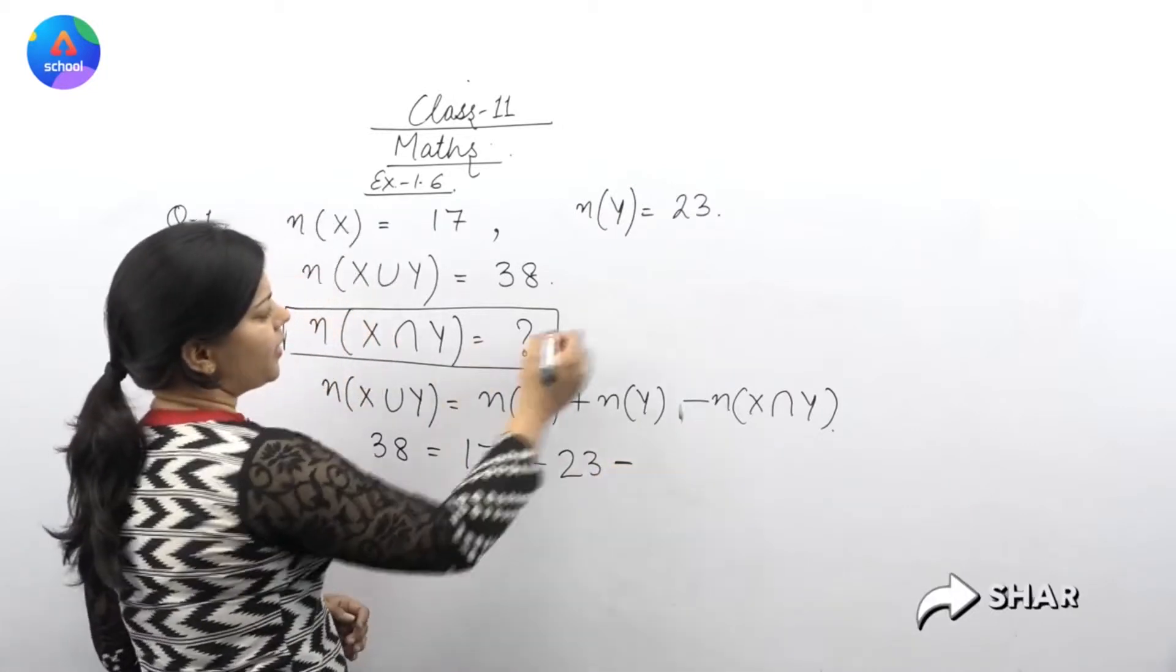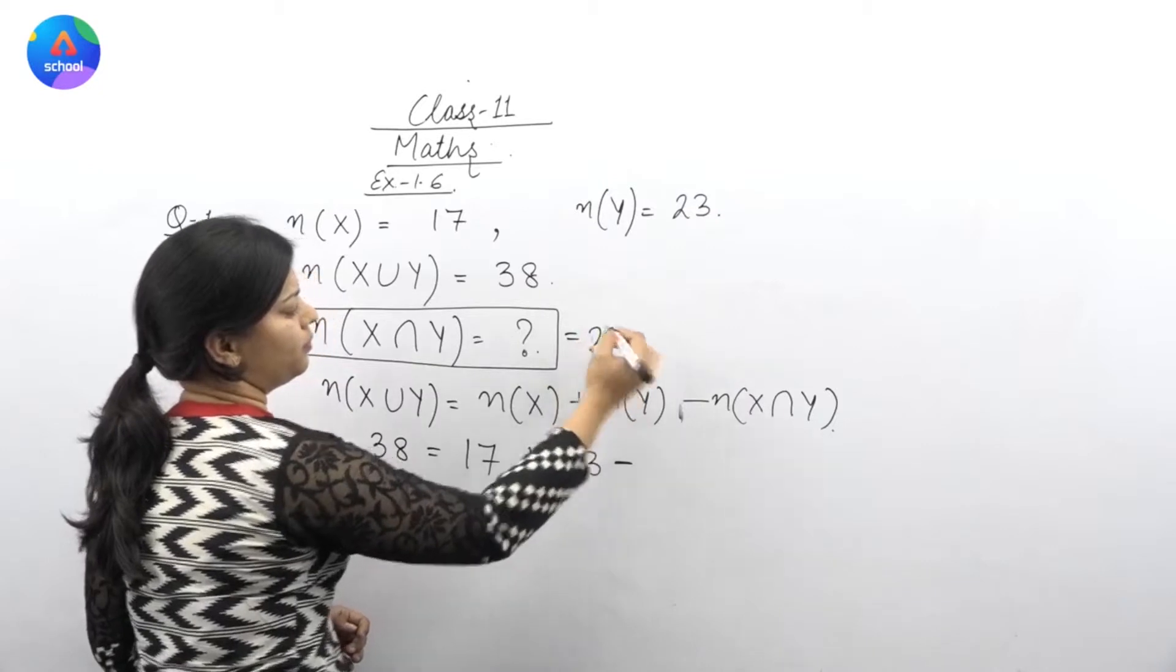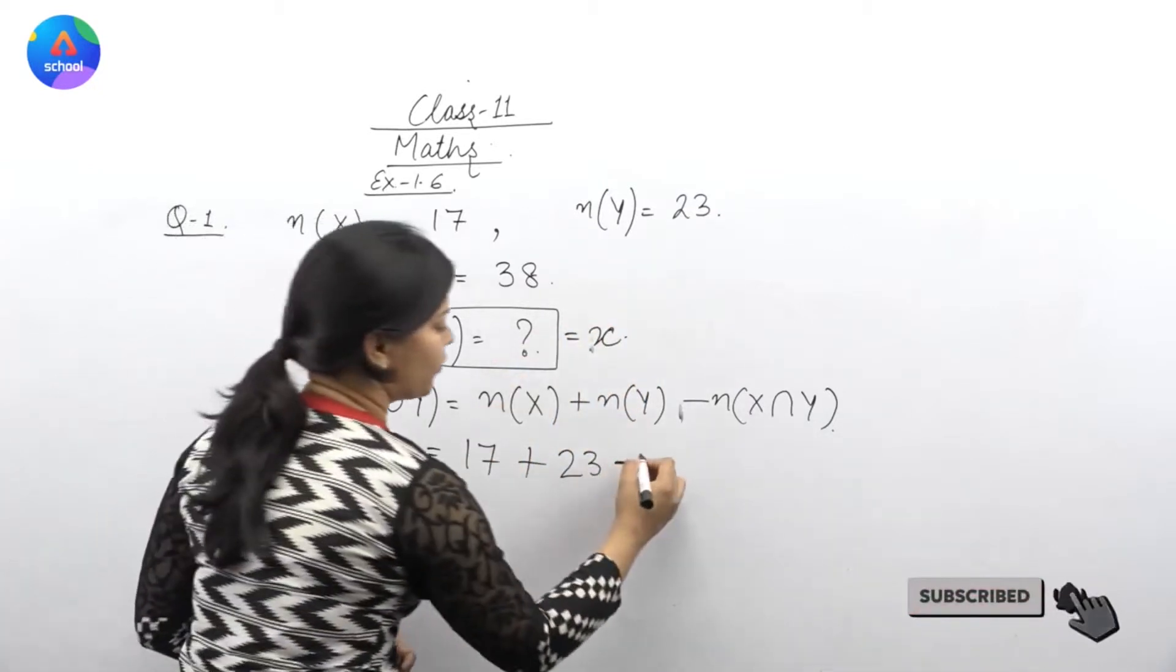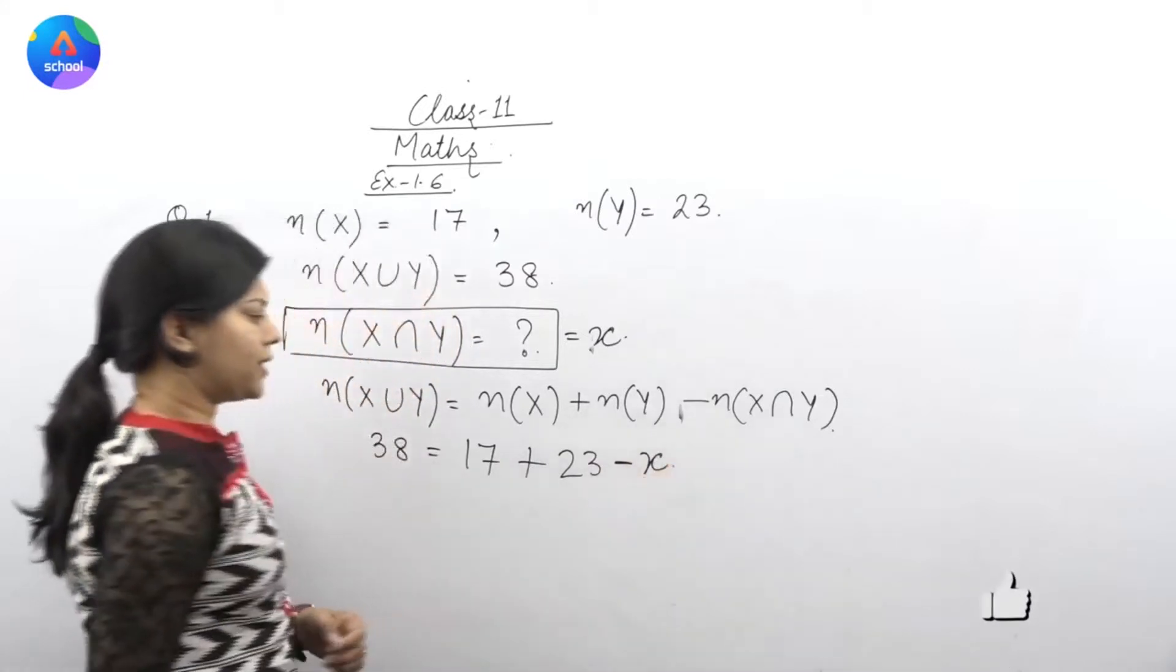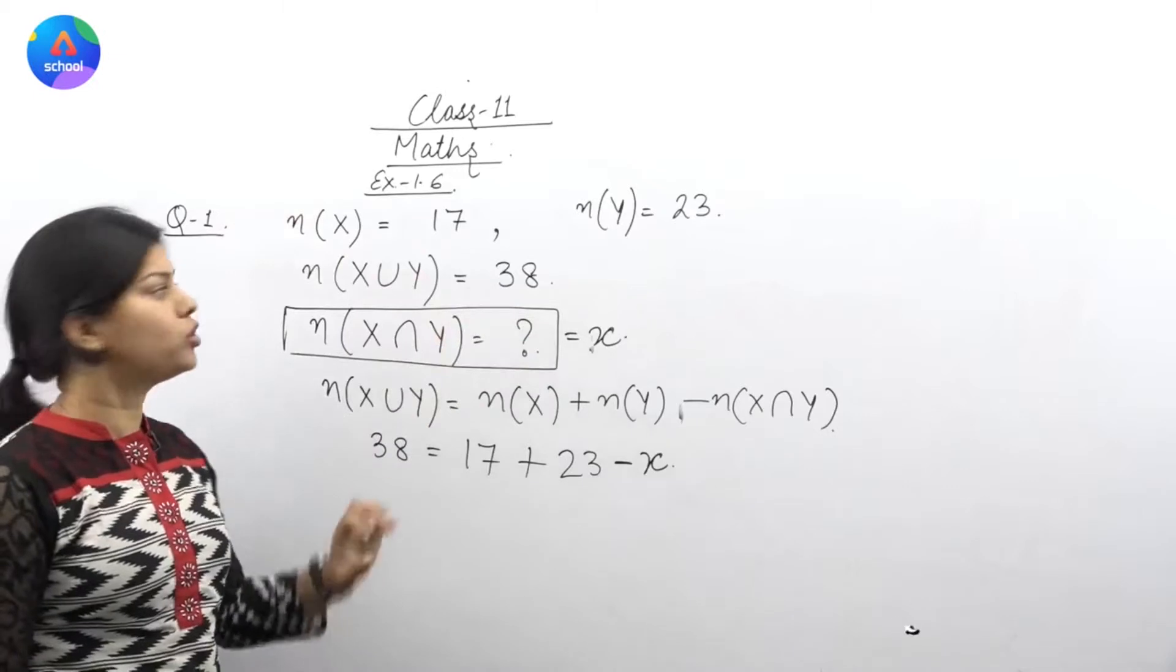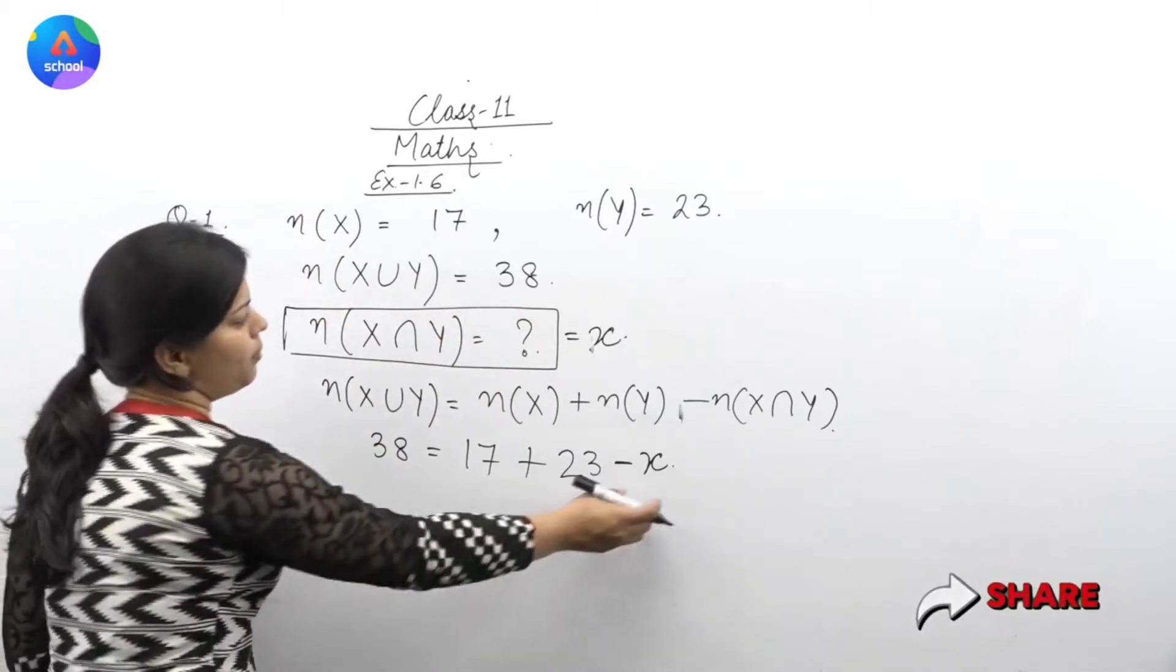Minus, let us take it x. I'm assuming it as x. Now I will find out the value of x. Right? So, let's write here x. This is small x. Don't confuse between small x and capital X. Capital X means set and small x here I have taken the value.